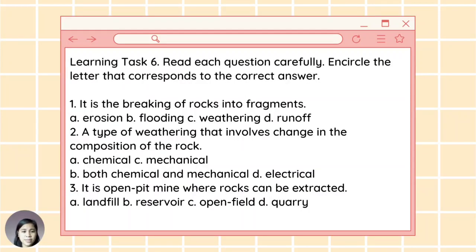And for learning task number six: Read each question carefully and encircle the letter that corresponds to the correct answer. Number one: It is the breaking of rocks into fragments. A: Erosion. B: Flooding. C: Weathering. Or D: Runoff. Number two: A type of weathering that involves change in the composition of the rock. A: Chemical. B: Chemical and mechanical. C: Mechanical. Or D: Electrical. Number three: It is an open deep mine where rocks can be extracted. Letter A: Landfill. B: Reservoir. Letter C: Open field. Or letter D: Quarry. And these are the correct answers. For number one: C. Number two: A. And number three: D.